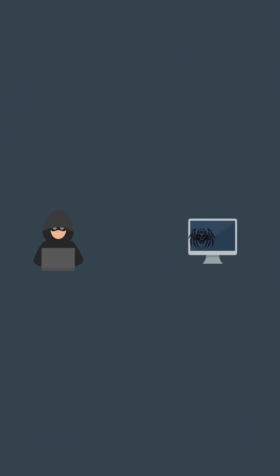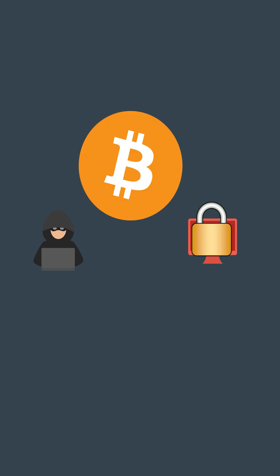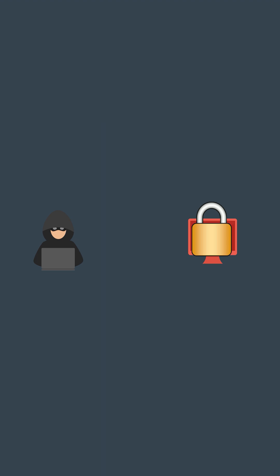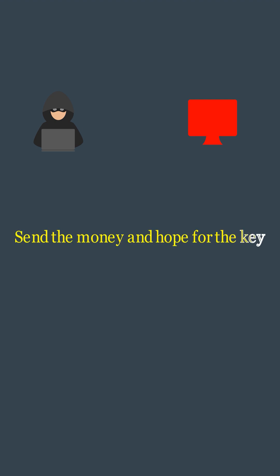In a ransomware attack, the hacker infiltrates a computer system using malicious software and encrypts the files, rendering them inaccessible to the user. The attacker then demands a ransom payment, usually in the form of cryptocurrency, in exchange for a decryption key needed to regain access to the files. After the attack, the victim is left with two options: either send the money and hope to get the key, or not send any money at all and lose access forever.